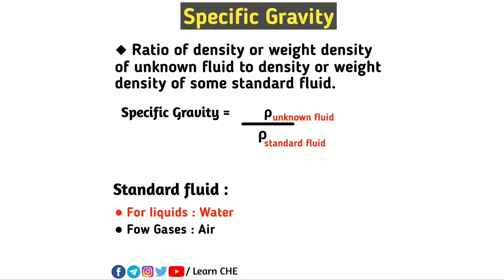What is specific gravity? Specific gravity is the ratio of density or weight density of an unknown fluid to the density or weight density of some standard fluid.